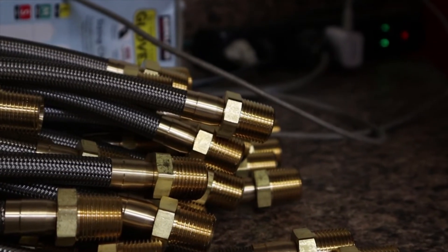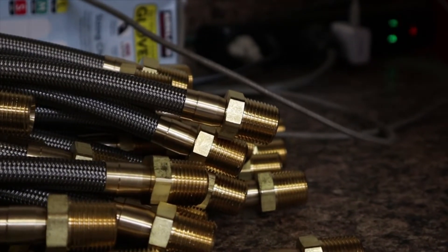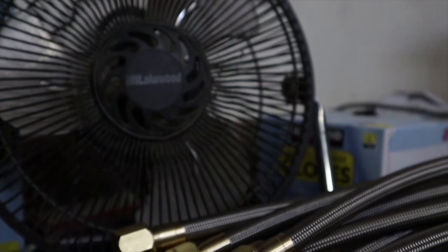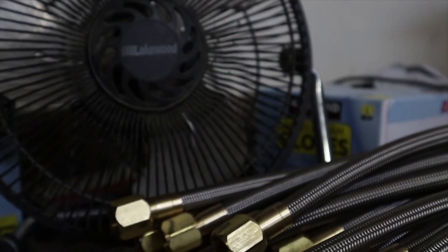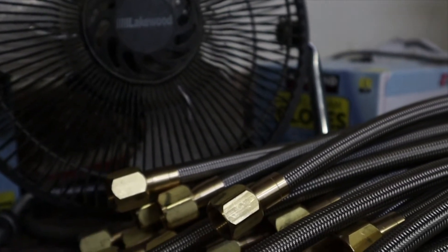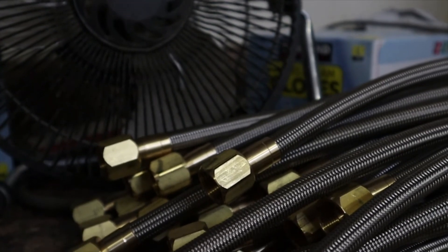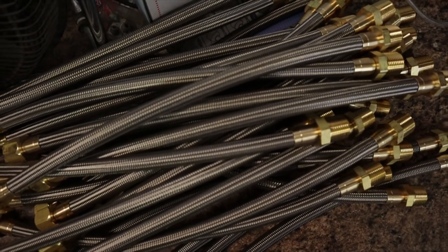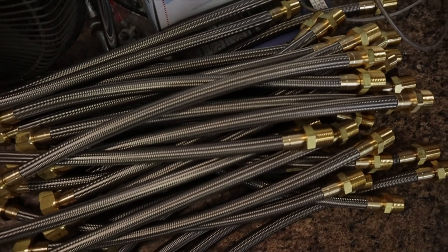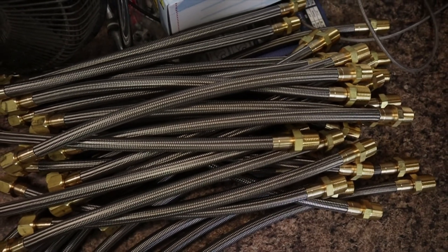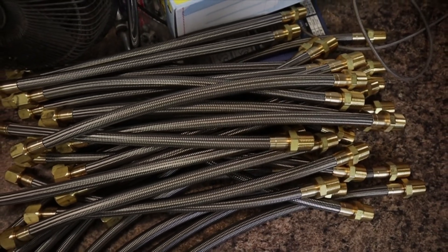Welcome back to another Paragon Performance video. In this video we're going to show you how to crimp a stainless steel braided PTFE hose and a few quick tips to help up your crimping game. This is a step-by-step guide that can be applied while using similar crimp machines. We're using our PTFE stainless steel dash 8 hoses in this video with our corresponding dash 8 brass fittings.